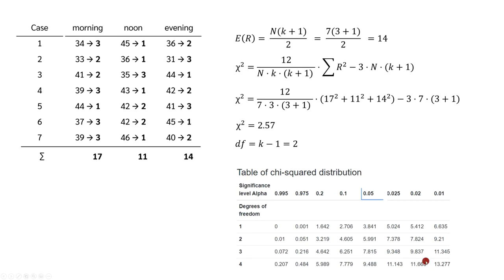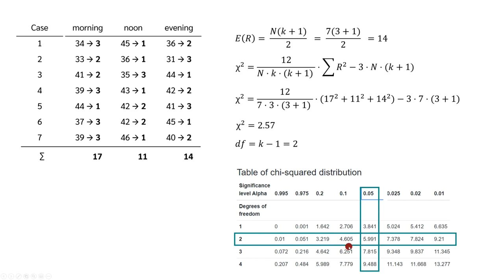Finally, we read the critical chi-square value from the table of critical chi-square values, using a significance level of 0.05 and 2 degrees of freedom — the critical value is 5.99. Since 5.99 is greater than our calculated value of 2.57, the null hypothesis is not rejected, and based on these data there is no difference between responsiveness at the different time points. If the calculated chi-square value had been greater than the critical one, we would reject the null hypothesis.